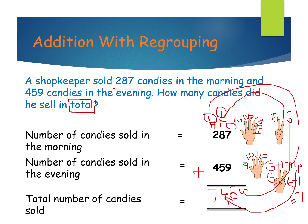How many candies did he sell in the evening and morning altogether? 746.